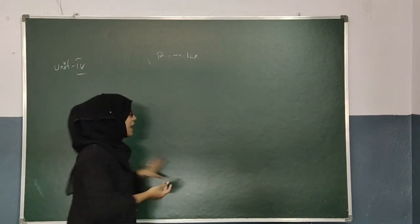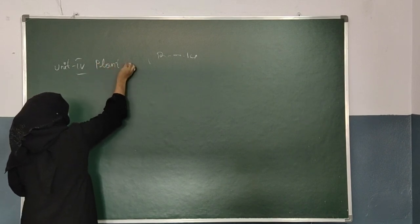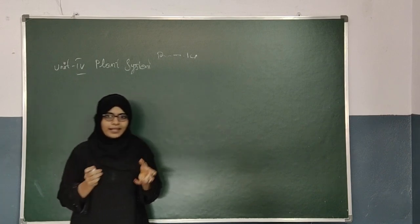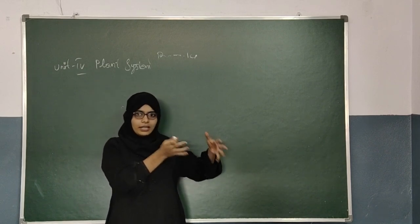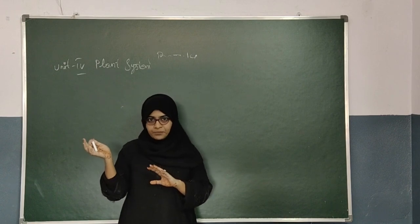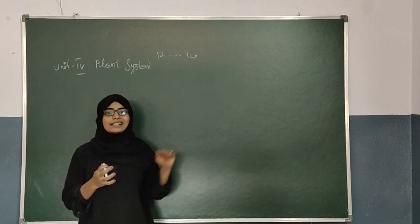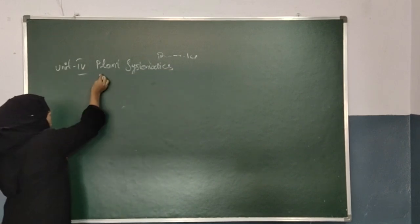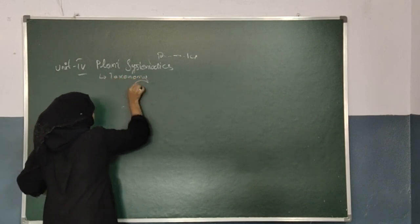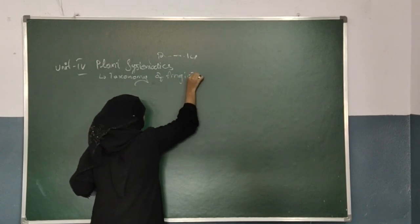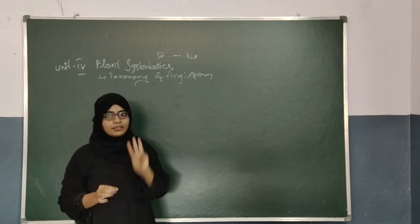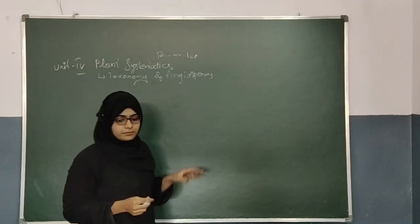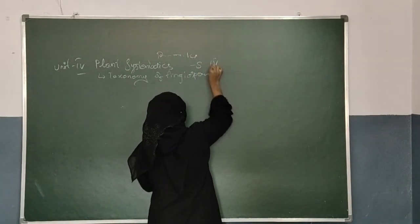Unit 4 is called Plant Systematics. This chapter is basically about how you will be dividing or classifying plants according to their families. Just like we belong to different families and everyone has a family name, plants also have a family name. In Plant Systematics you have a chapter called Taxonomy of Angiosperms, which is nothing but classification of plants according to their families. In brief, you will be studying three families: Fabaceae, Solanaceae, and Liliaceae. This chapter consists of a short answer question and a very short answer question.